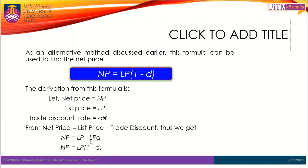Alternatively, you can find the net price directly using the net price formula: NP = LP × (1 − D), where LP is the list price and D is the trade discount rate expressed as a decimal.